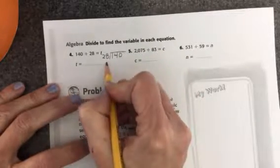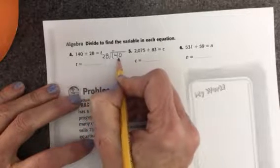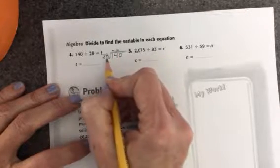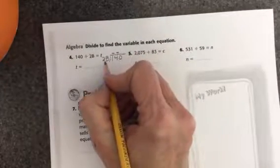140 divided by 28. Okay, so I'll ask myself, how many times will 28 go into 1? It won't. How many times will 28 go into 14? It won't. How many times will 28 go into 140? Well, that's what I need to figure out.